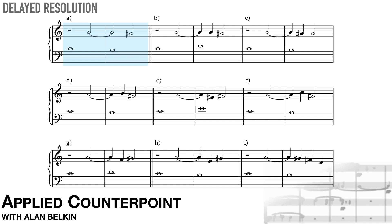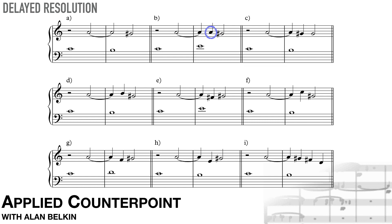In A we have a standard fourth species suspension. All the other examples are ornamented versions of the same thing. B simply repeats the suspended A before resolving as expected on the third beat. In terms of harmony and dissonance, nothing has changed — only the rhythm is affected. C works the same way, except here the repeated note is the resolution. Both of these situations are common and pose no problem.